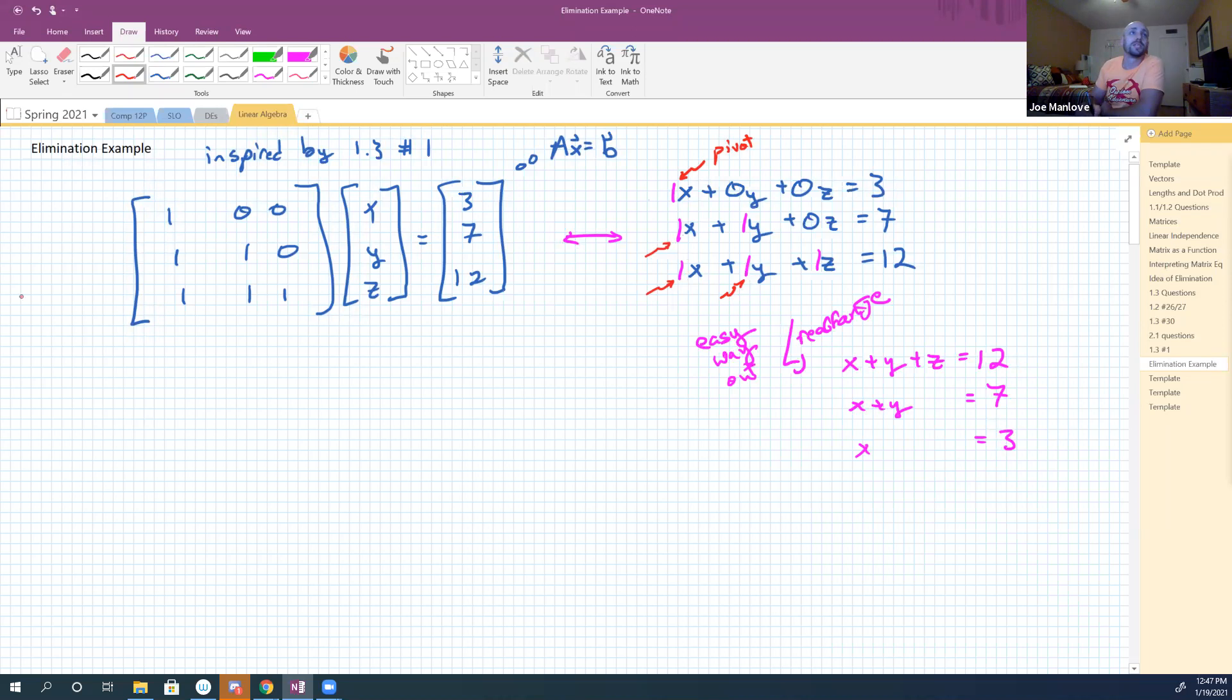So I'm going to take my system, so I have one x plus zero y plus zero z equals three. I'm going to write everything down with plenty of space in between it. So one x plus one y plus zero z is seven, and one x plus one y plus one z equals 12.